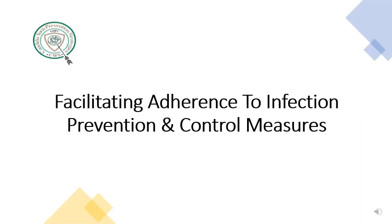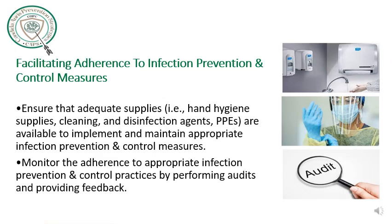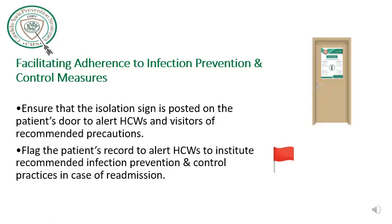Healthcare facilities should have administrative support to ensure that adequate supplies — including hand hygiene supplies, cleaning and disinfecting agents, and personal protective equipment — are available to implement and maintain appropriate infection prevention and control measures. Facilities should also monitor adherence to appropriate IPC practices through audits and feedback. Ensure that isolation signs are posted outside the patient door to alert healthcare workers and visitors, and flag the patient record to alert healthcare workers in case of readmission.